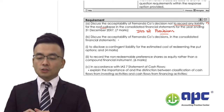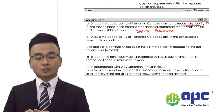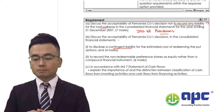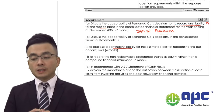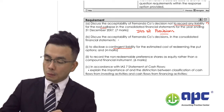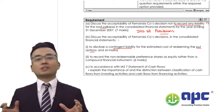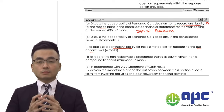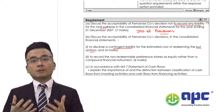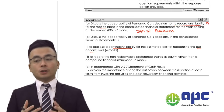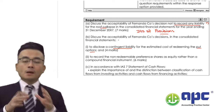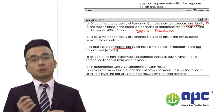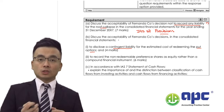Part B: discuss the acceptability of a company's decision in the consolidated financial statements — number one, to disclose a contingent liability for the estimated cost of redeeming the put options. A put option is simply an option to sell something at a particular price. In this case, the company has written — meaning sold — the put option to others.